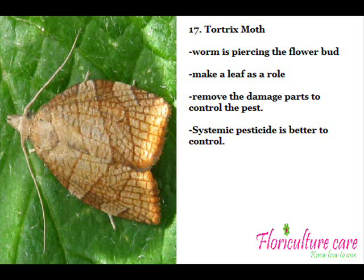Tortrix Moth worm pierces the flower bud and lives inside it, or makes a leaf into a roll and lives inside. In the first stages, remove the damaged parts to control the pest. A systemic pesticide is better for control.